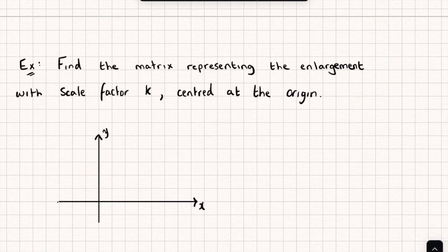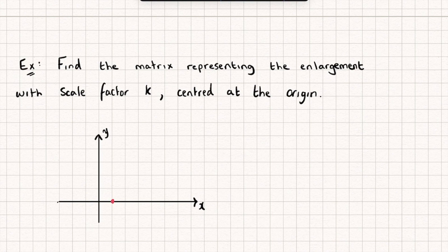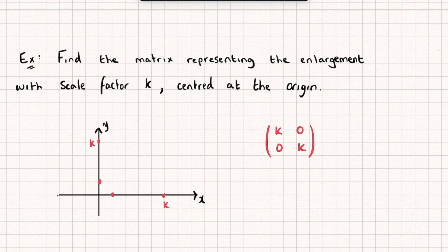So if it's going to be scale factor k, our point (1,0) is going to move to the point (k,0) and our point (0,1) is going to move to (0,k), so our transformation matrix is k, 0, 0, k where k is the scale factor. We can represent any enlargement scale factor k centered at the origin by this matrix.